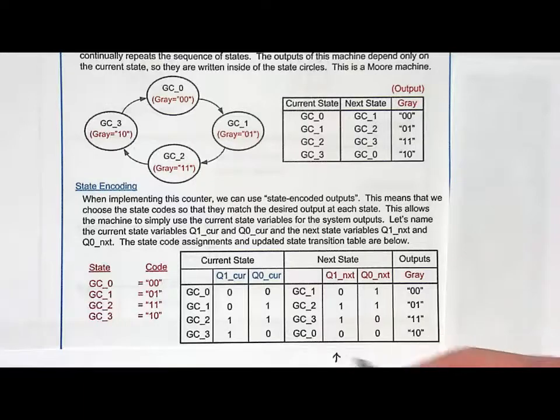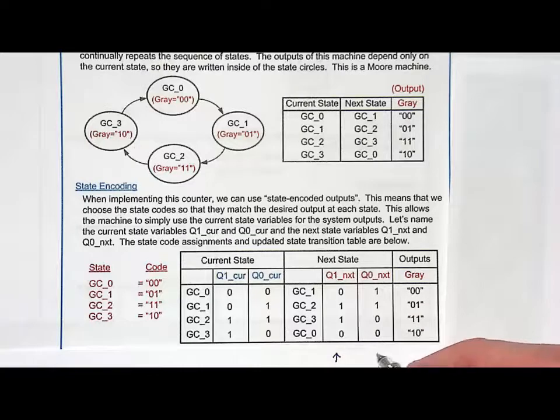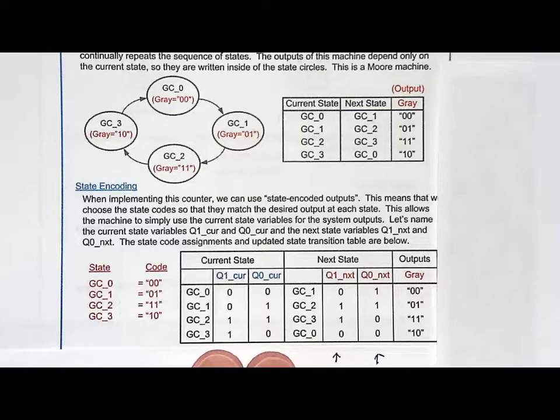I go to synthesize my next state logic. And I need to build a circuit for q1next and q0next. But what are the inputs? Well, the inputs are going to be nothing more than q1cur and q0cur. So I'm going to put these into a two-input kmap and see if I can minimize some logic. We're going to come up with a logic expression for q1next. And then I'll do the same thing for q0next.